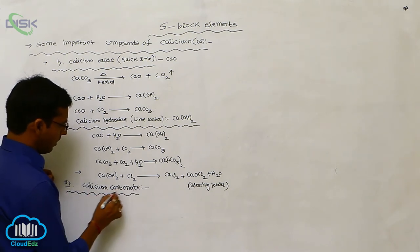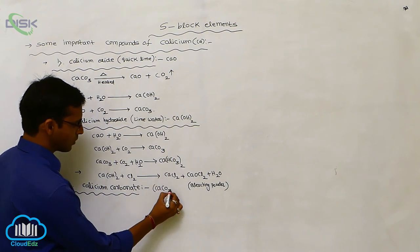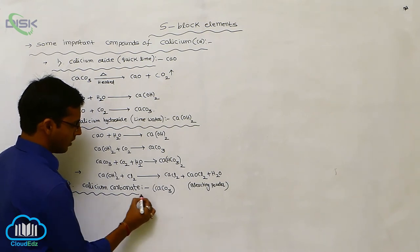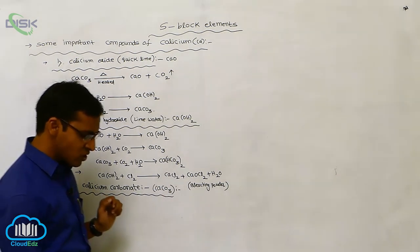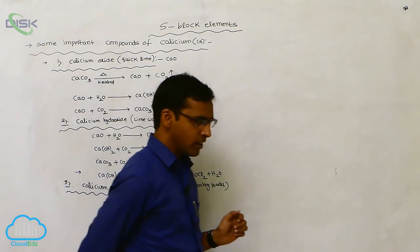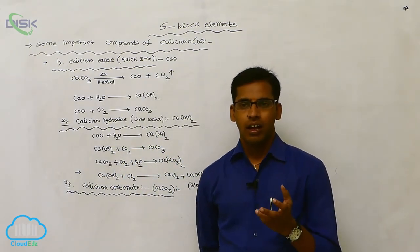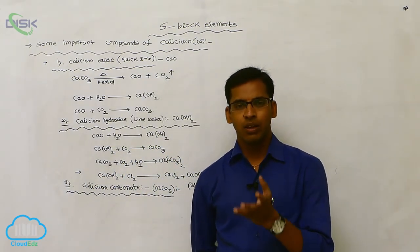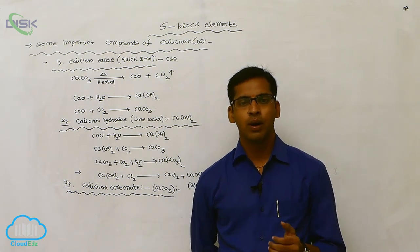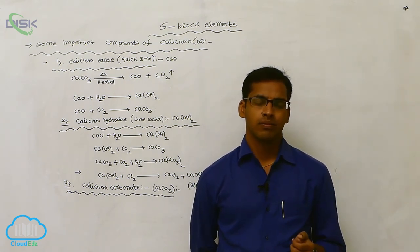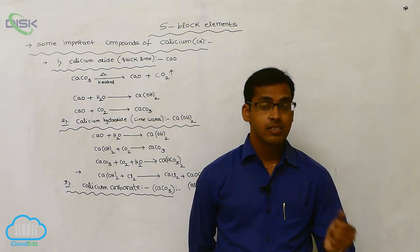The next compound is calcium carbonate, with the formula CaCO₃. Calcium carbonate is generally available in the form of marble or cement.